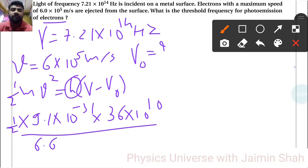So 6.63 × 10⁻³⁴ on the right-hand side. Now we are left with ν - ν₀, which equals ν minus ν₀.